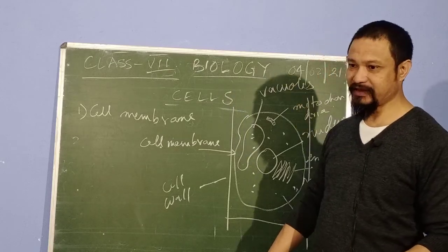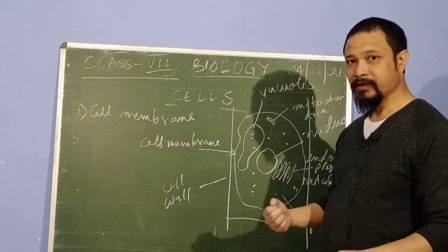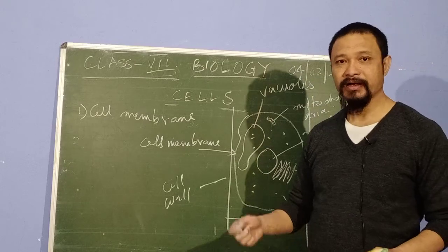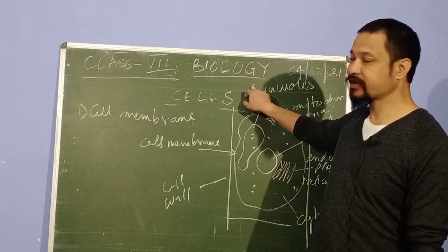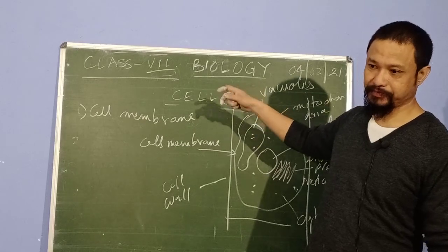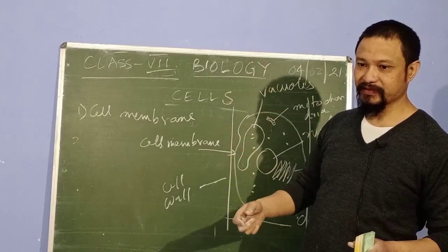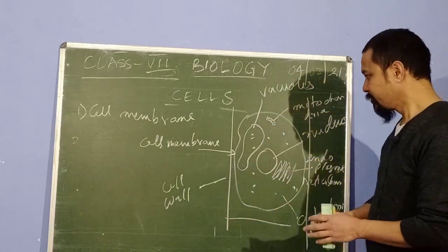If you see plants, usually whatever wood that is there, after you cut it up, once it dries up, it becomes hard. It's all because of the cell wall. It is a very protective structure. It gives shape to the cell also. In fact, plants and trees you find them hard, it's because of the cell wall that is there.